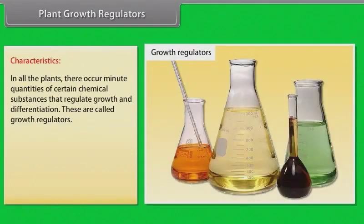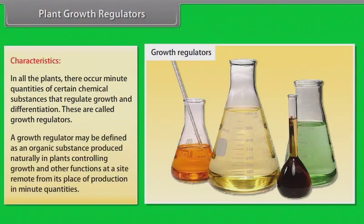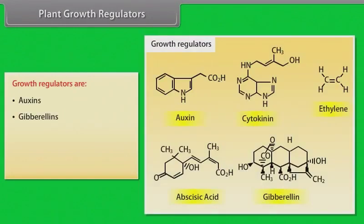Plant growth regulators: In all plants, minute quantities of certain chemical substances regulate growth and differentiation. These are called growth regulators. A growth regulator may be defined as an organic substance produced naturally in plants, controlling growth and other functions at a site remote from its place of production in minute quantities. These are auxins, gibberellins, cytokinins, ethylene and abscisic acid.